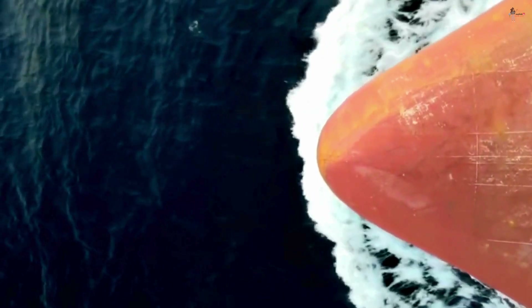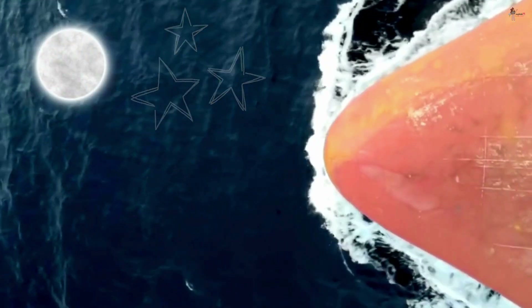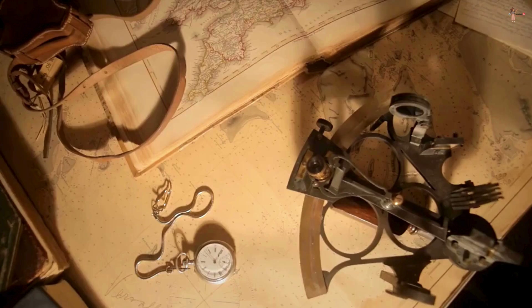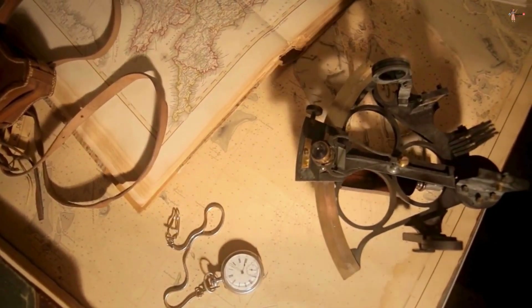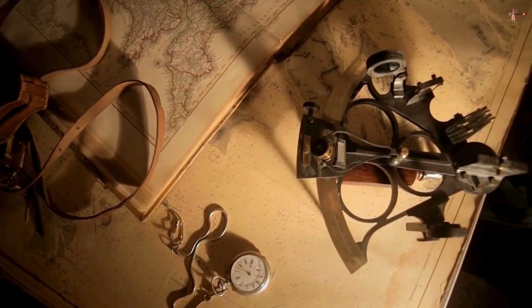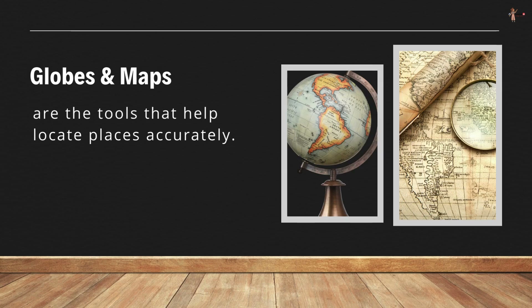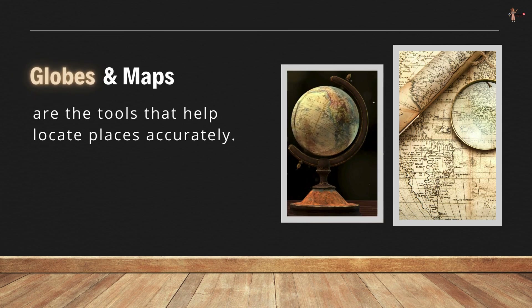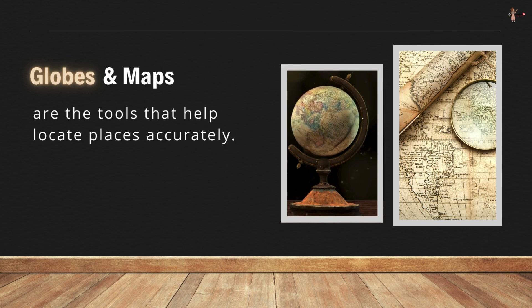The earth, as we know, is huge. Early travellers and explorers found it difficult to find their way across the earth with just the sun, moon, and stars to guide them. They felt the need for tools that would help them locate places accurately. Two important tools developed for this purpose are globes and maps. In this chapter we will learn about globes — and there is a very interesting fact about globes to share at the end of this chapter.